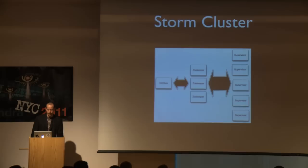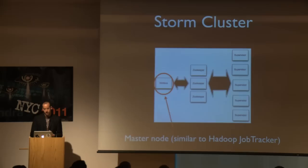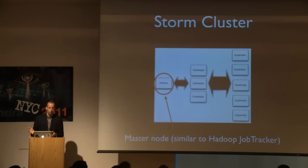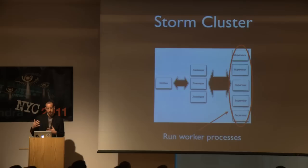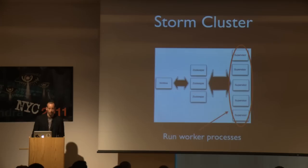A Storm cluster has three pieces. The first is Nimbus — the master node, playing a role similar to the Hadoop job tracker. When you want to start running a topology, you submit it to Nimbus, and Nimbus distributes the code around the cluster and launches workers to do the processing. There's a Zookeeper cluster in the middle used for cluster coordination. On the right you have a set of worker nodes — this is where your topologies actually run. Every worker node has a daemon called a supervisor that communicates to Nimbus through Zookeeper to know what workers should be running, and the supervisor starts and stops workers as dictated by Nimbus.